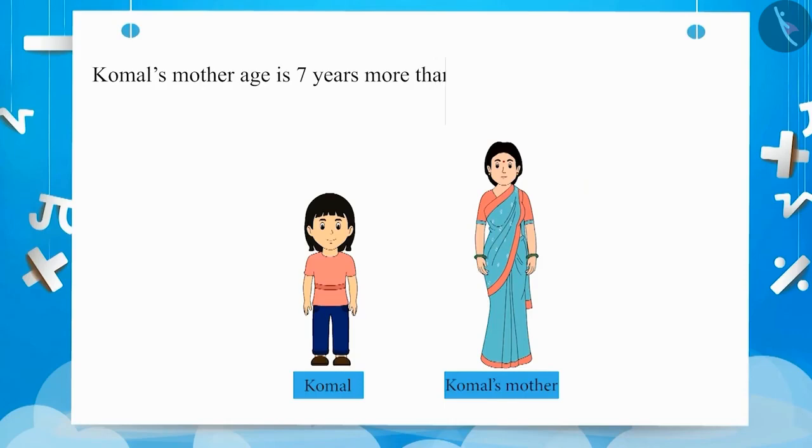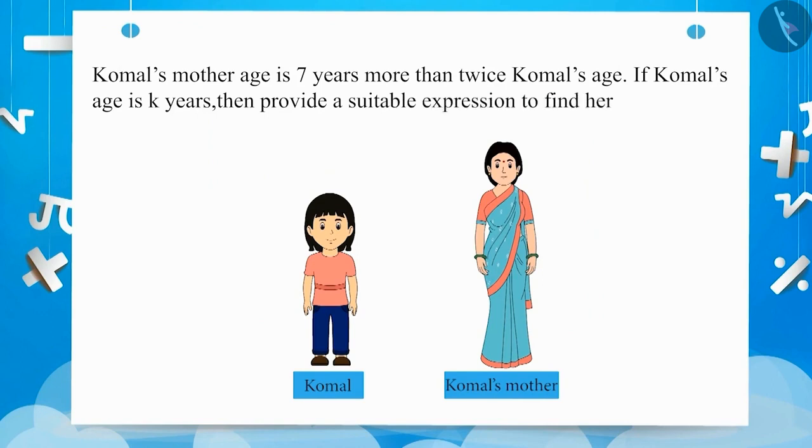Komal's mother's age is 7 more than twice her age. If Komal's age is k years, then provide a suitable expression to calculate her mother's age.